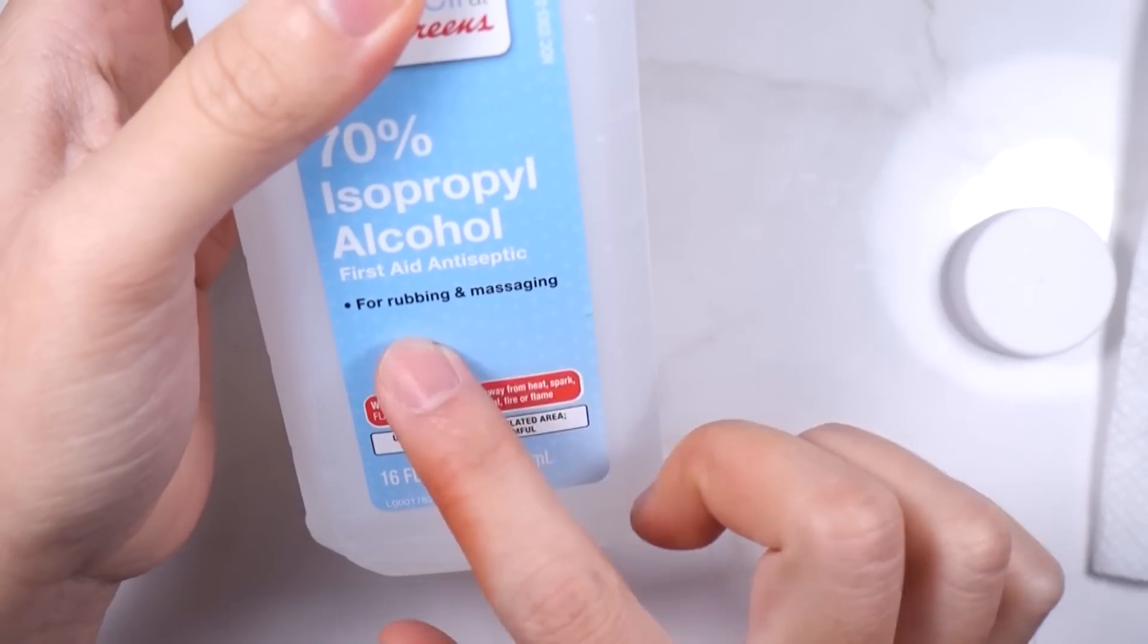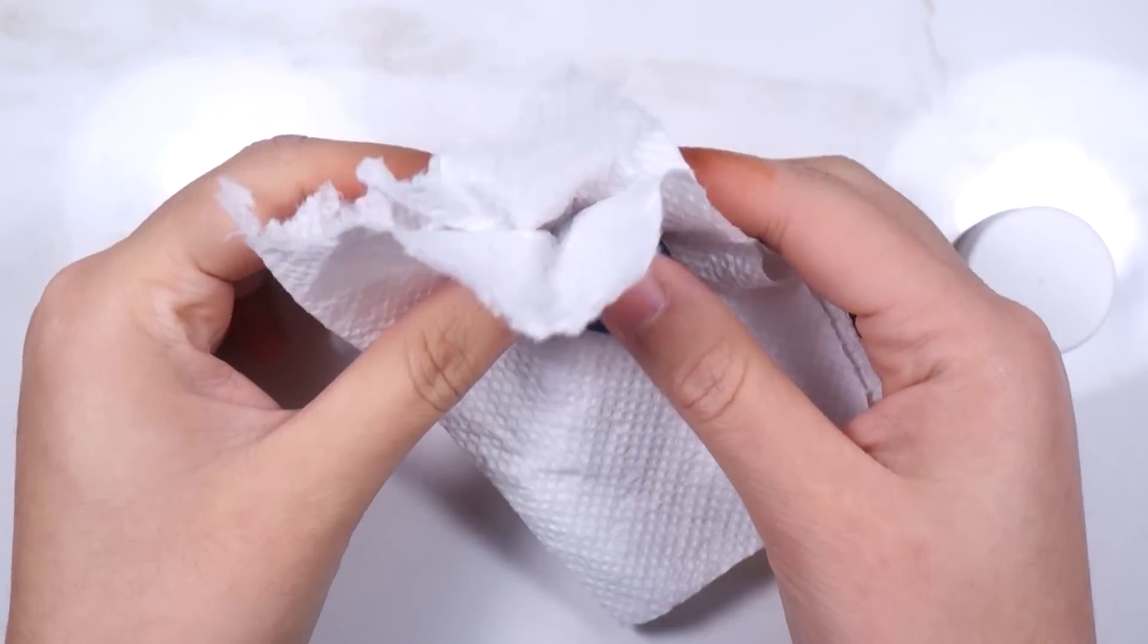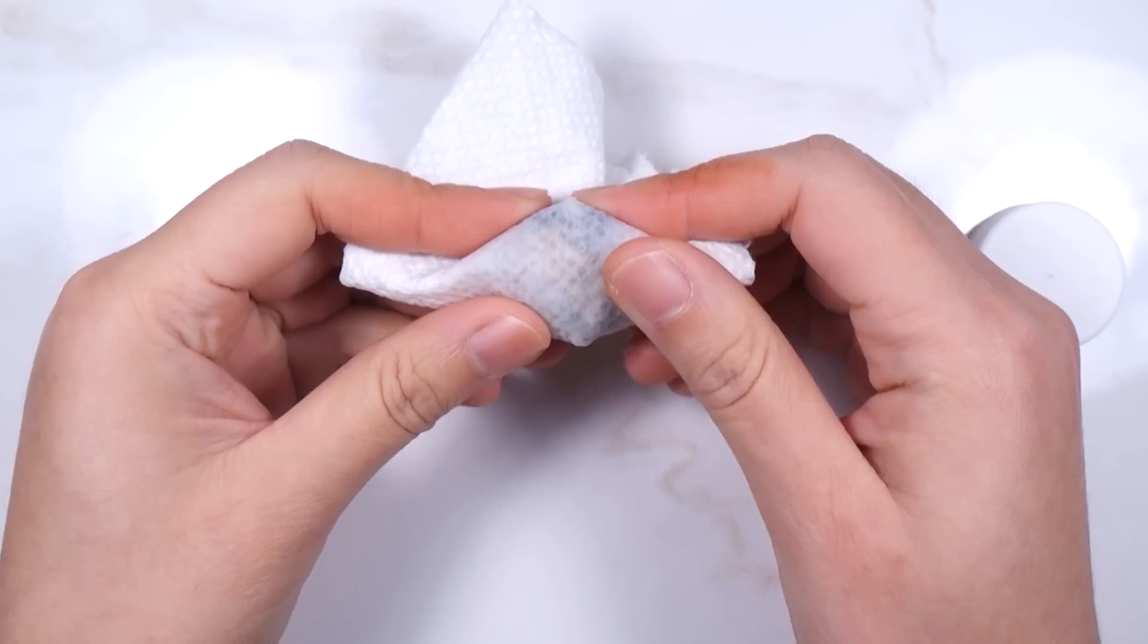Now pour some rubbing alcohol onto the paper towel and have the alcohol touching the paint side. Just wrap it up in the paper towel and hold it like that for 30 seconds.